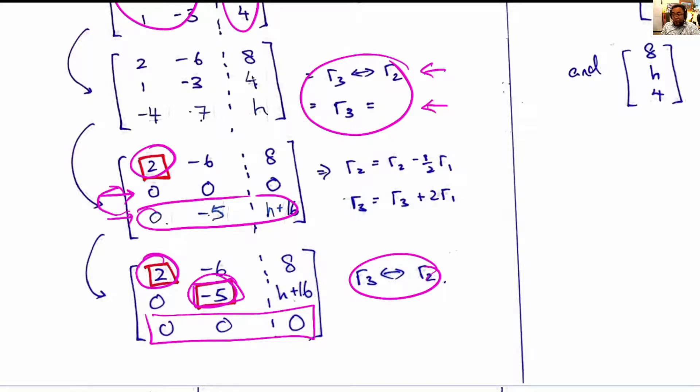The last row is redundant with no information. When we reach here, although we have three equations and two unknowns, the two unknowns have pivots and therefore can be solved.